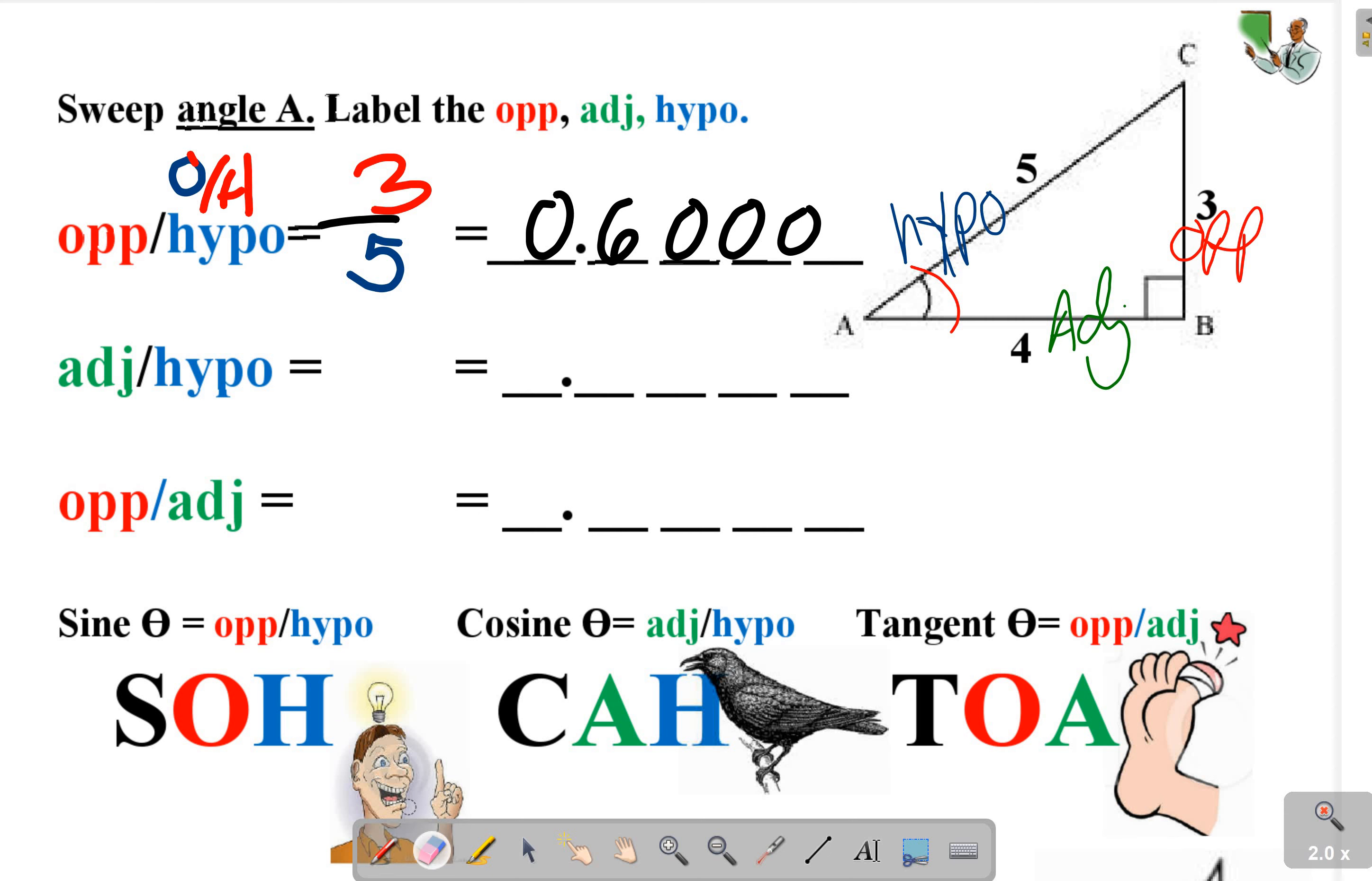Whoops, I got my colors backwards. Opposite over hypotenuse ratio.